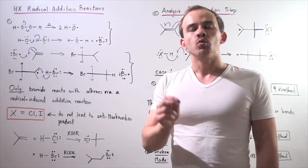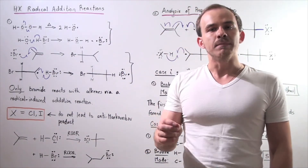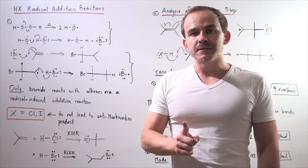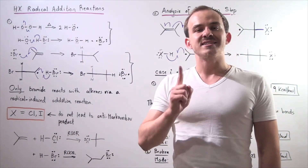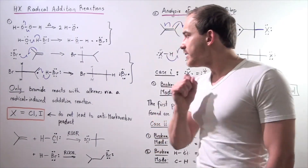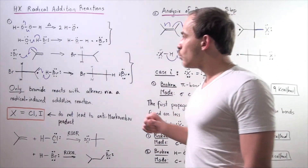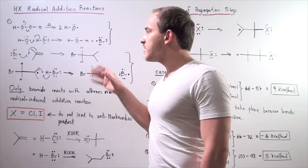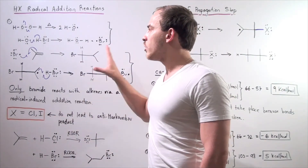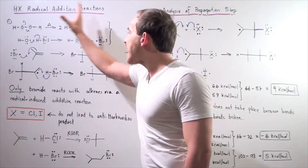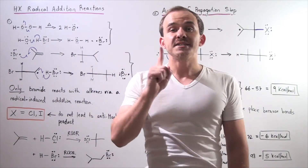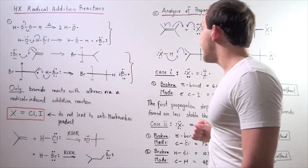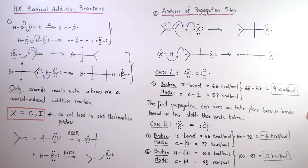The bonds being formed are less stable than the bonds being broken, which means that reaction will not take place. The reason the radical mechanism fails when bromide is replaced with iodide is because this first propagation step is endothermic.